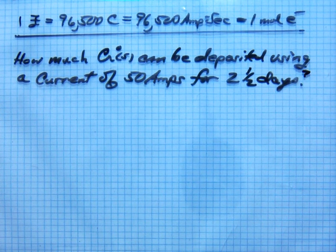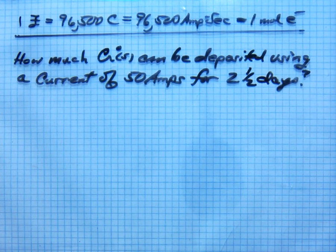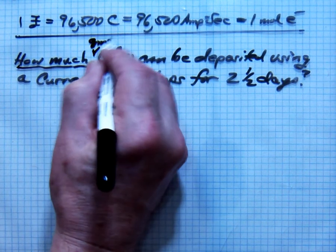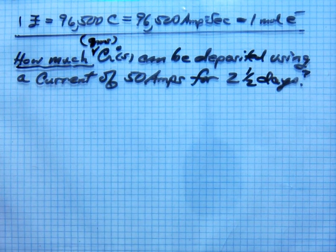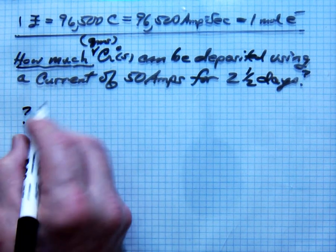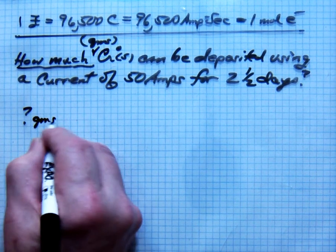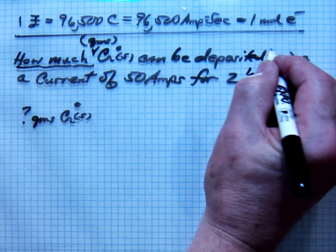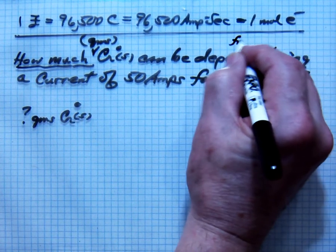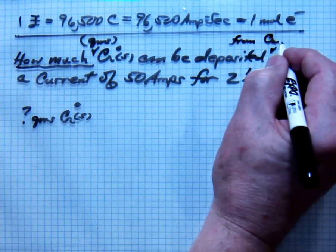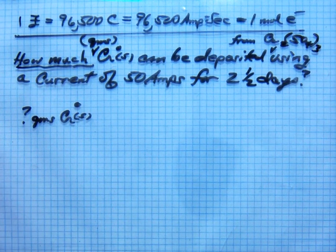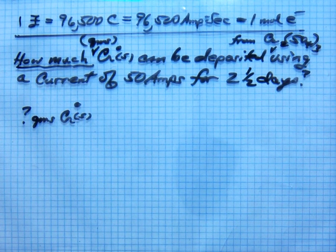When you approach one of these kinds of problems, you think in terms of the scientific method. What's the first step in the scientific method? Identify the problem. What they're looking for is how much in terms of grams. So in the start of one of these problems, start out by following the scientific method. What's the problem? How many grams of chrome solid can be deposited from chrome sulfate?